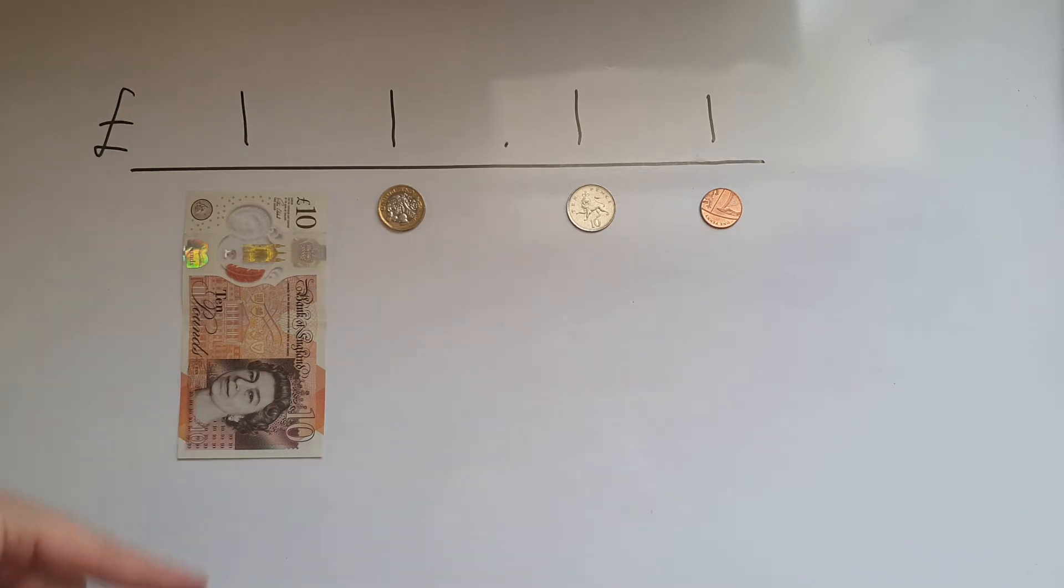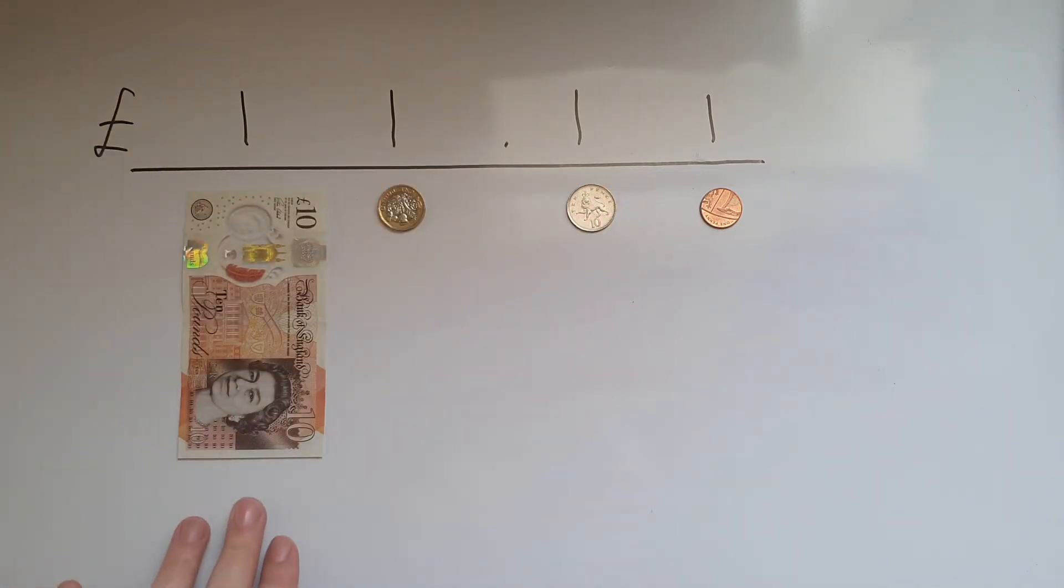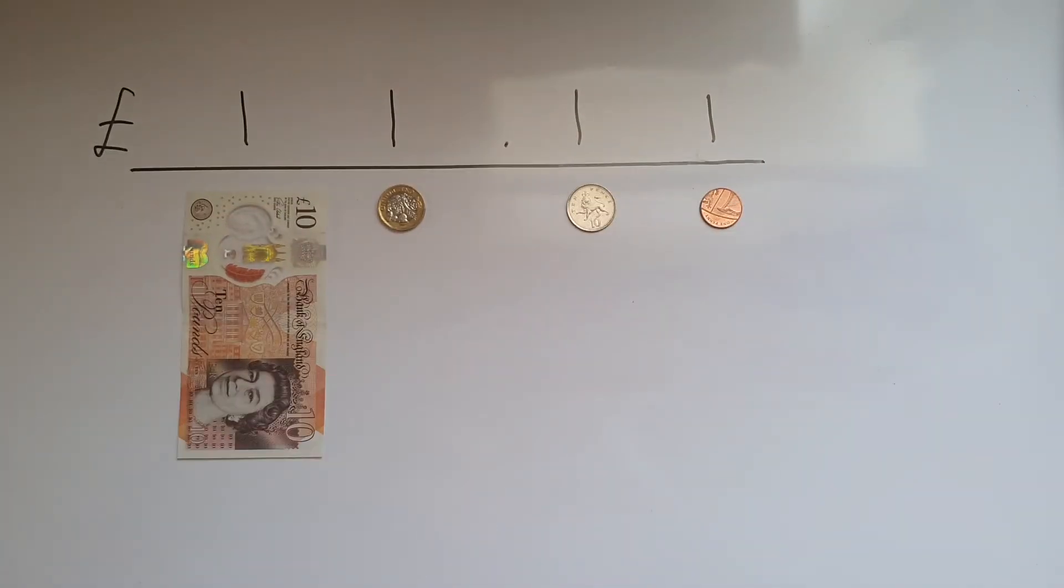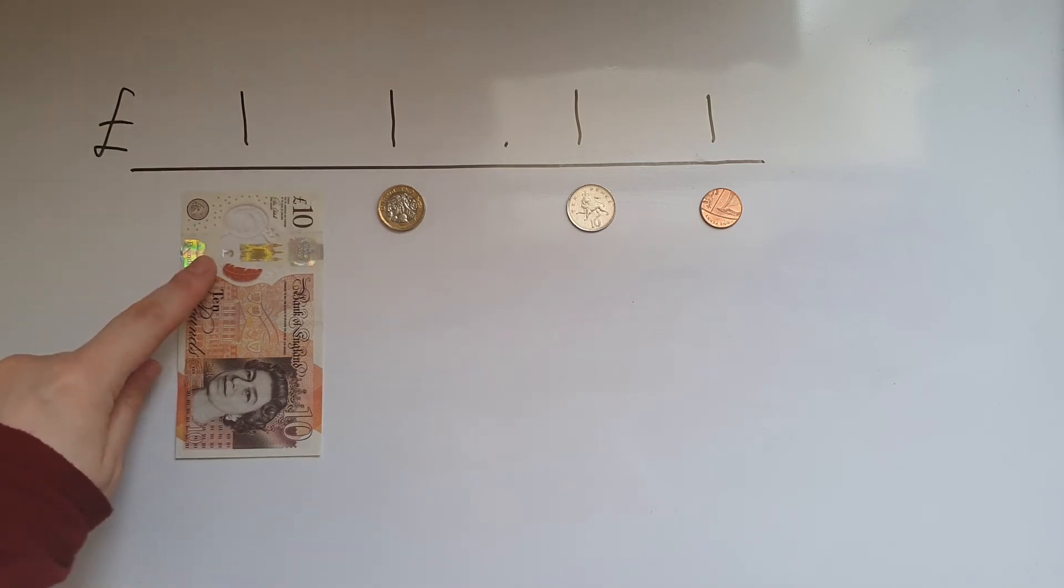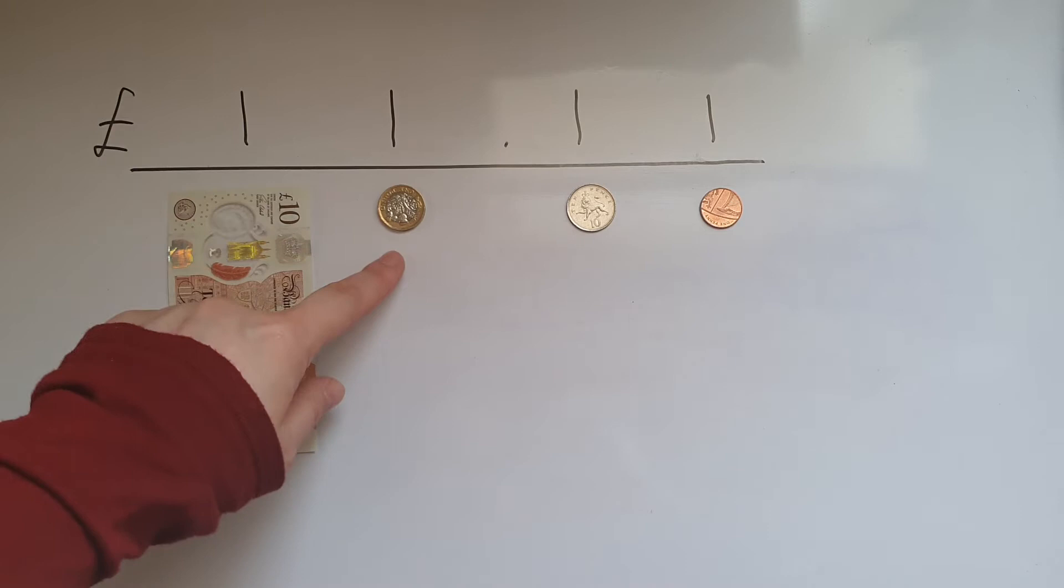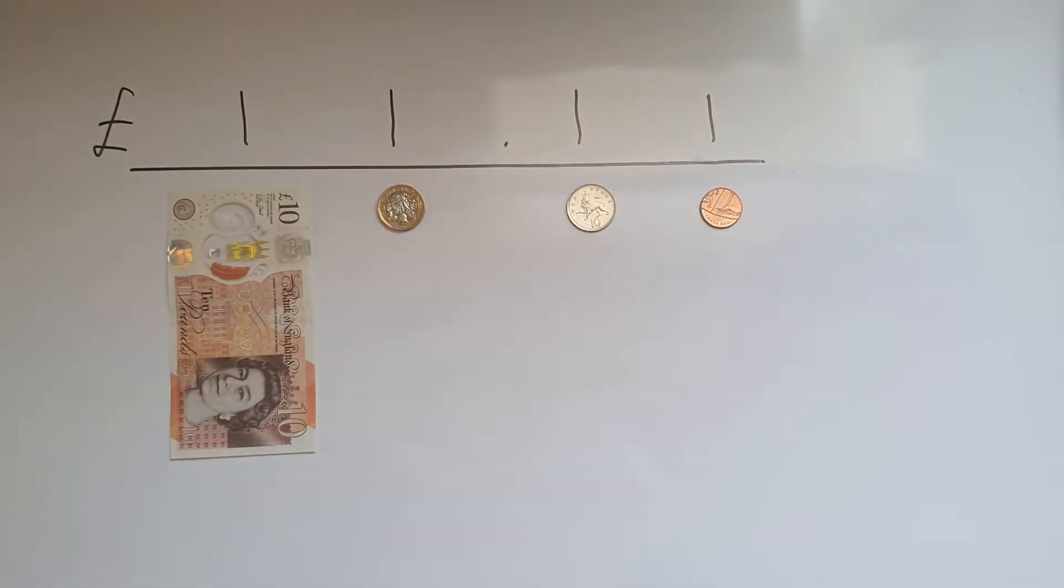So I've tried to represent the value of each of the digits using the pound, using notes and the coins. So this is eleven pounds and eleven pence. This one in here represents ten pounds. This one in here represents one pound. This is ten pence and this is one pence.